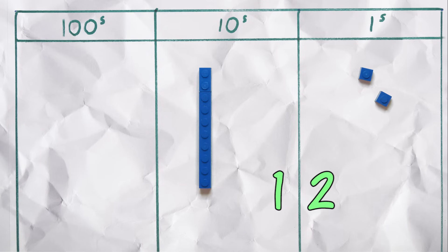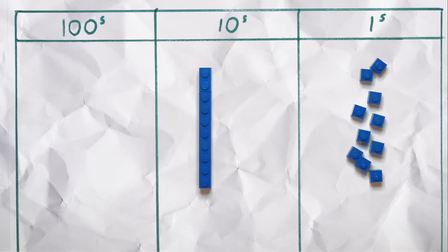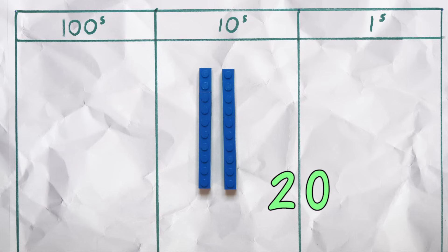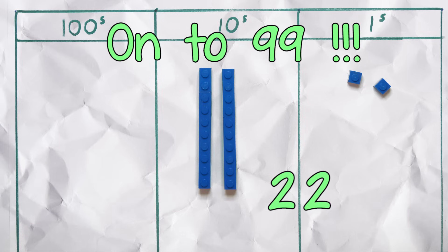Now we can continue. And when we reach 19, we do the same thing. Now we have 2 tens and 0 units, and we write it as 20. Continue like this all the way to 99.